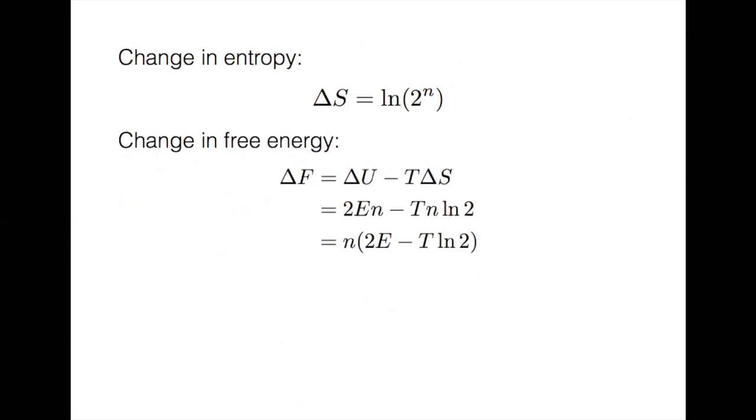At low temperature, where we have spontaneous magnetization, or ferromagnetic behavior, we can assume stable boundaries. Thus, delta f is less than or equal to zero.